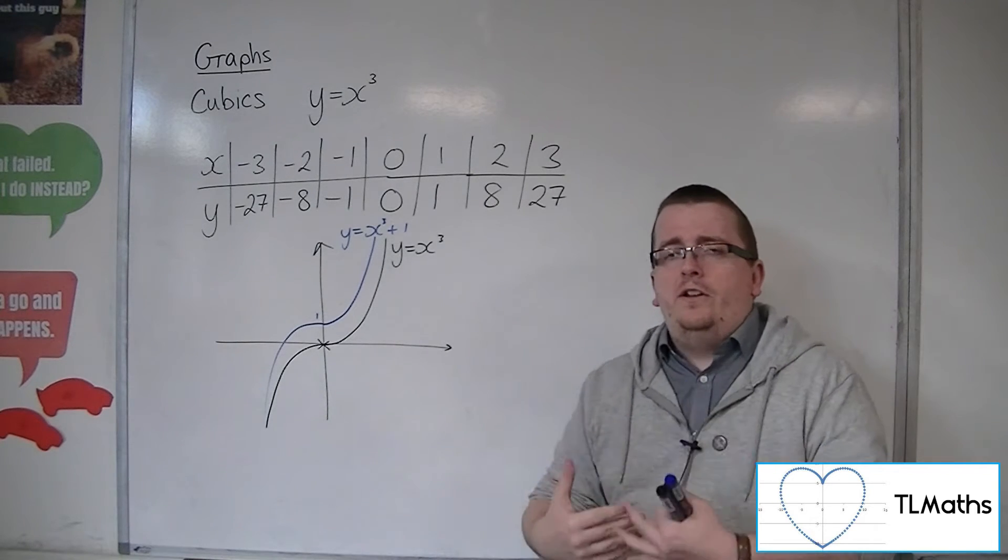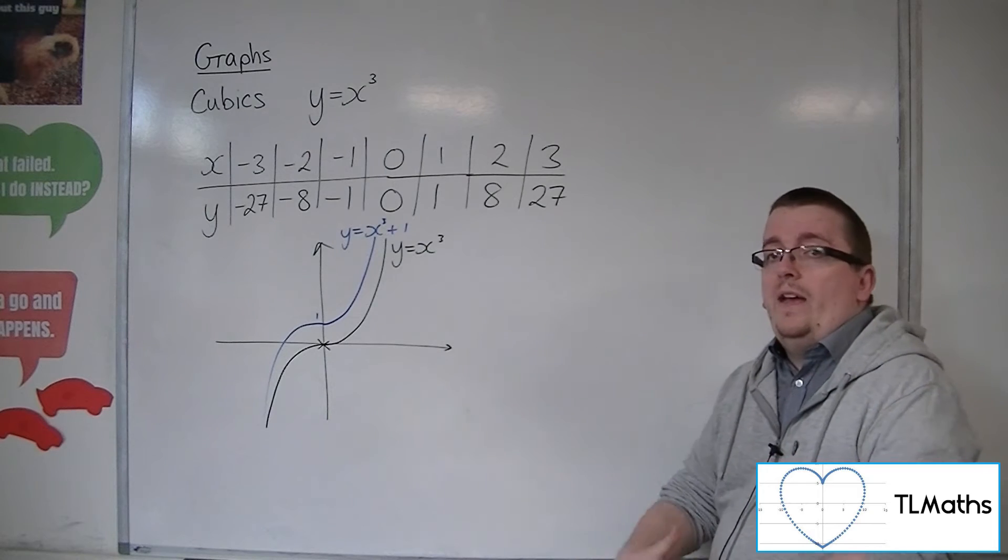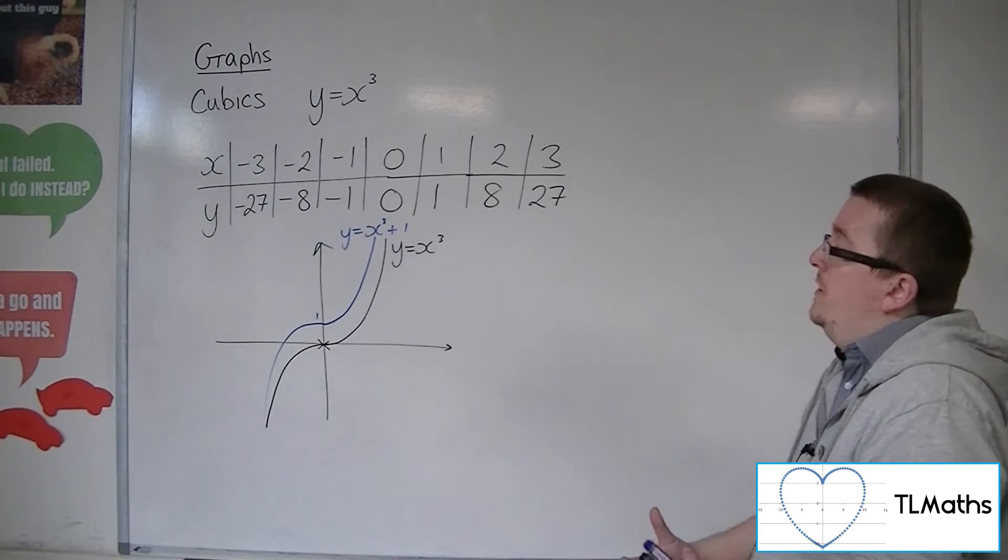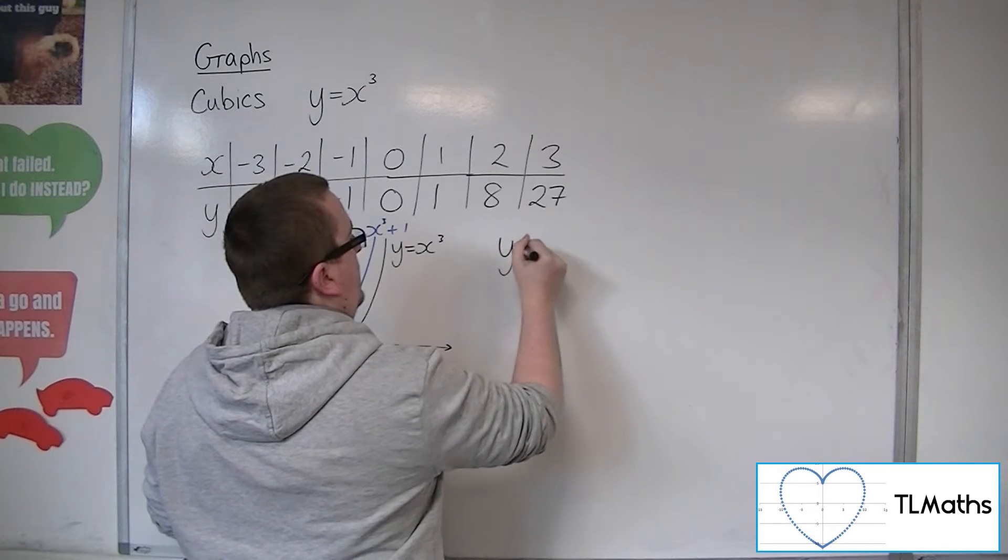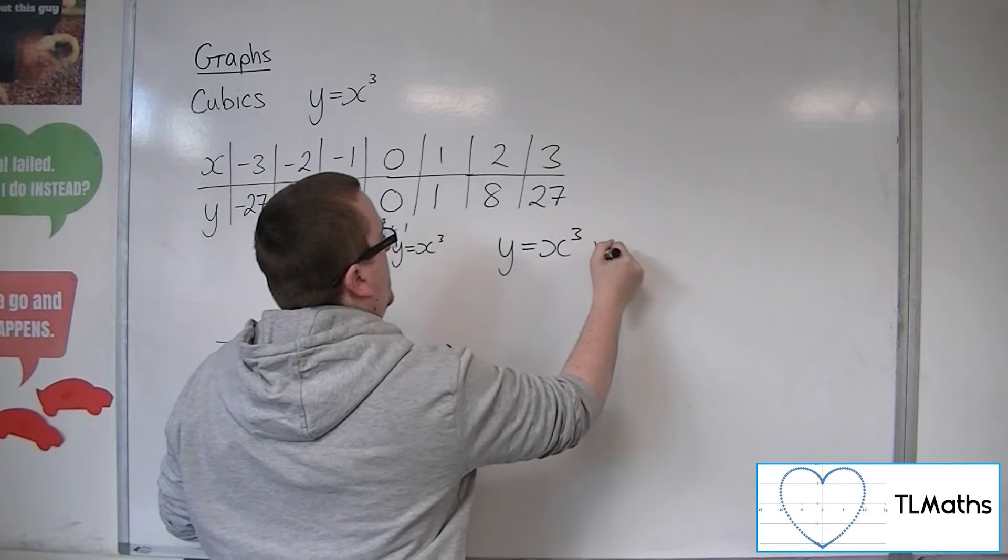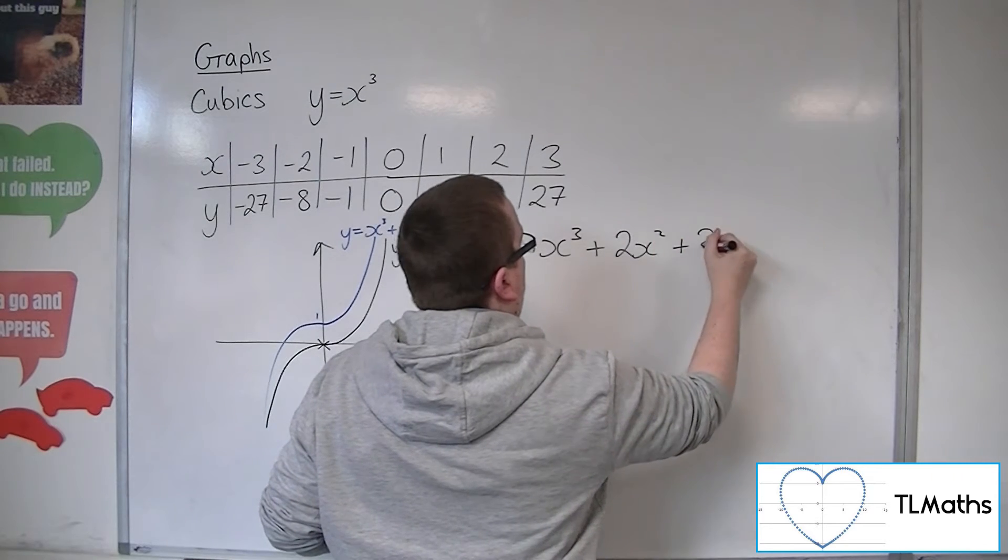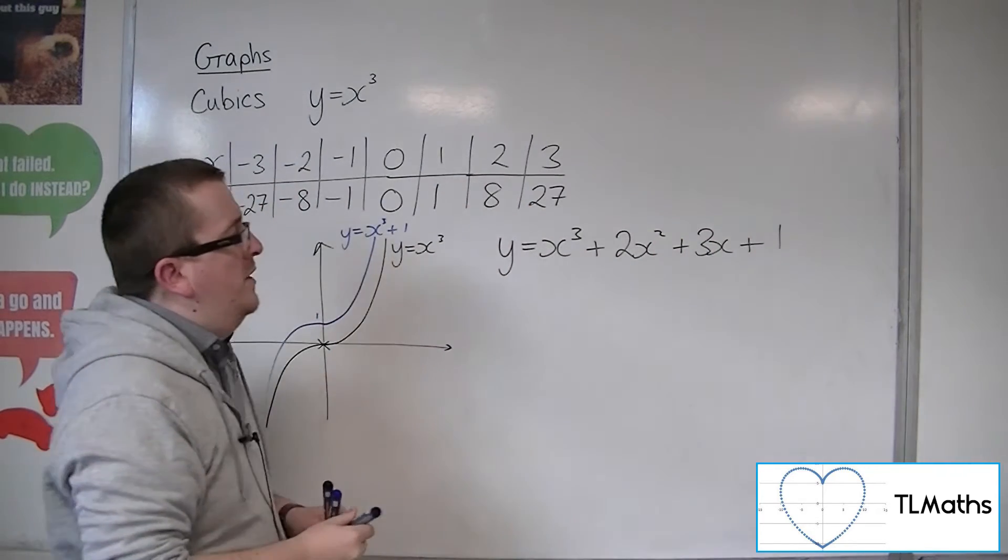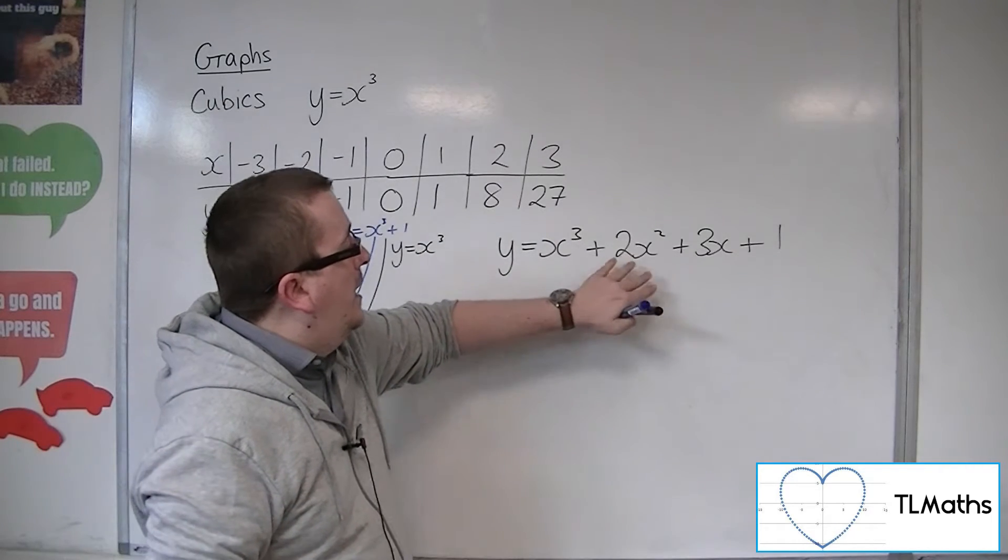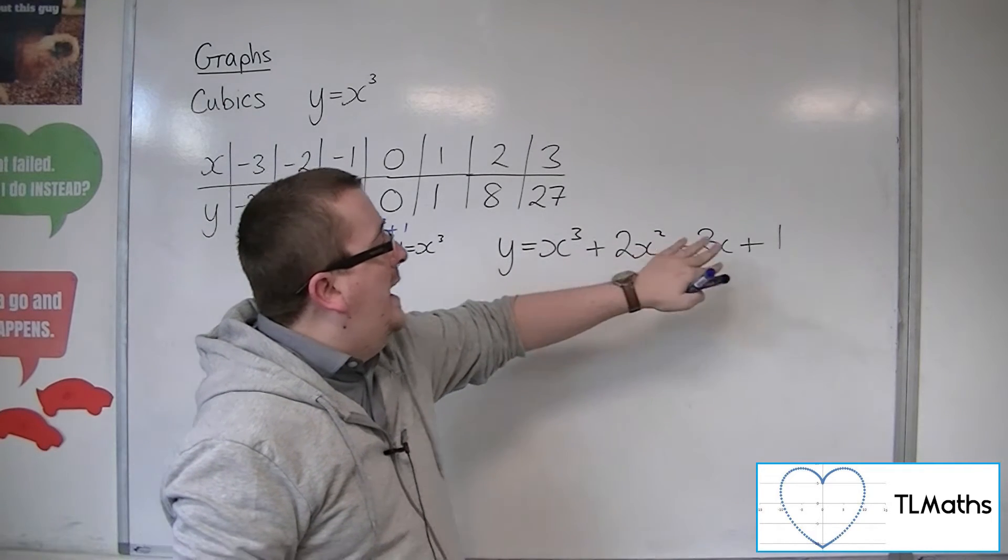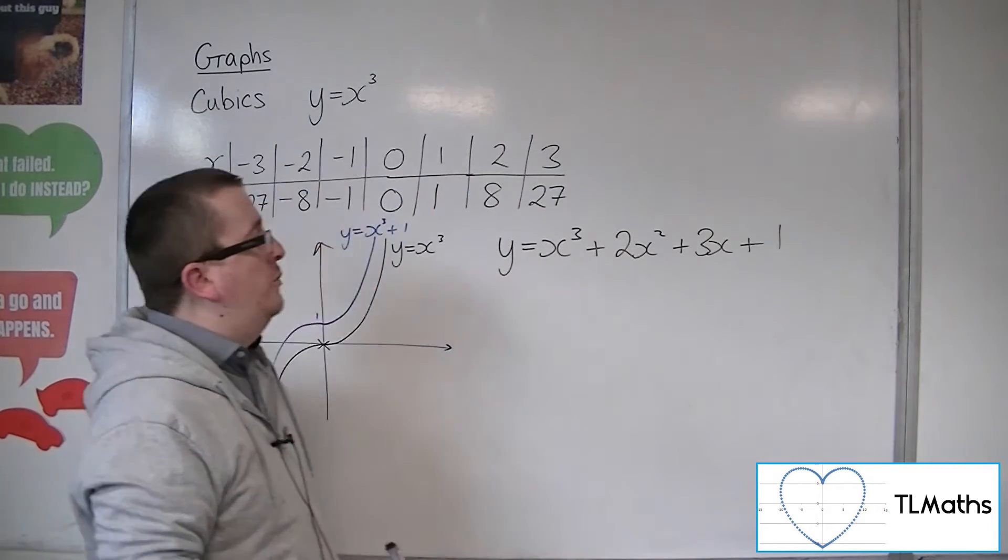If, however, you start to add on x squareds and x's, then you could end up with something like this. So you might have y is equal to x cubed plus, let's say, 2x squared plus 3x plus 1, for example. So here is a cubic that has a quadratic and a linear term involved and the constant term as well.